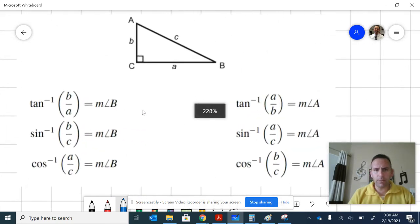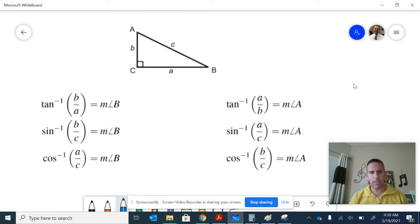Here in this diagram, you can see I have a triangle ABC, and I have a whole bunch of things on the screen. If I want to find the measure of the angle A or B, I can use inverse trigonometric functions.